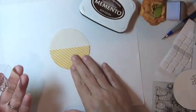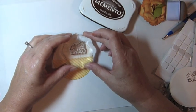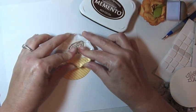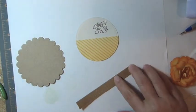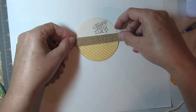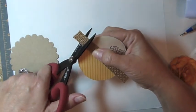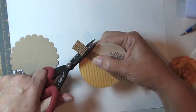Stamp your sentiment using brown ink on the ivory side of your circle. Trim a piece of burlap paper to one half inch wide and adhere to your circle. Use scissors to trim each side of the burlap paper along the circle.